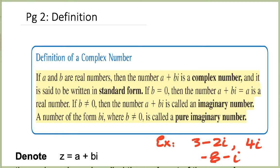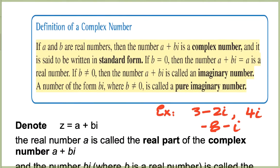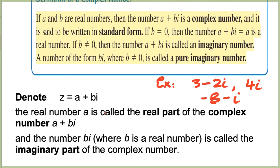Let's go a little deeper. When we denote z equals a plus bi as a complex number, a is called the real part of the complex number a plus bi, and bi is called the imaginary part of the complex number.